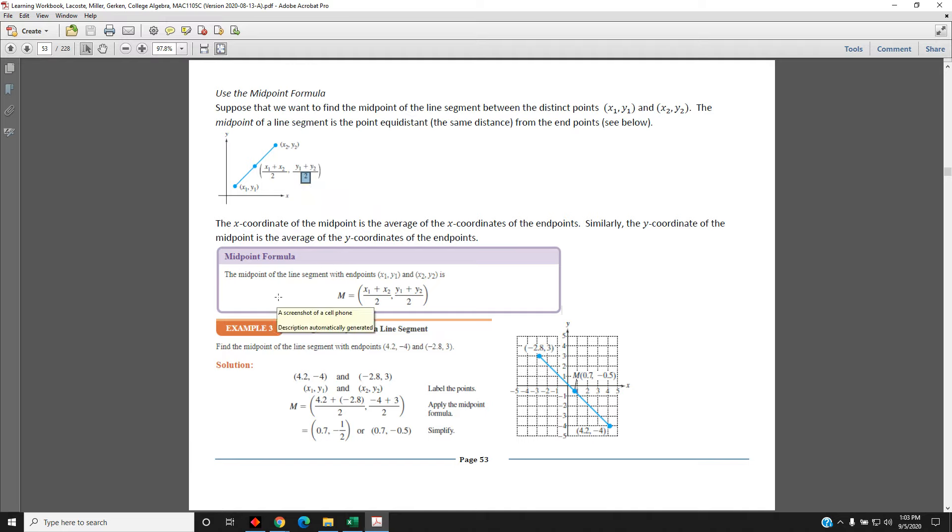This gives us the midpoint formula. The midpoint of the line segment with endpoints x1 comma y1 and x2 comma y2 is m equals the coordinates: x-coordinate is x1 plus x2 all divided by two, and the y-coordinate is y1 plus y2 all divided by two.